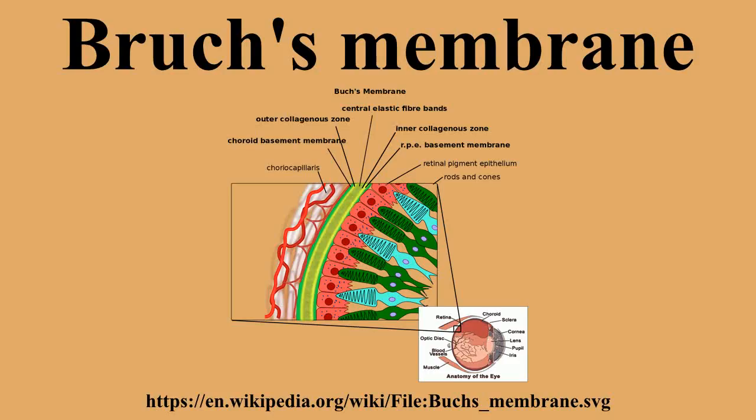Bruch's membrane consists of 5 layers: the basement membrane of the retinal pigment epithelium, the inner collagenous zone, a central band of elastic fibers, the outer collagenous zone, and the basement membrane of the choriocapillaris.